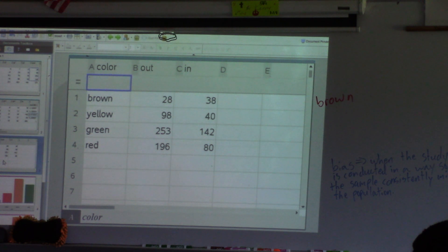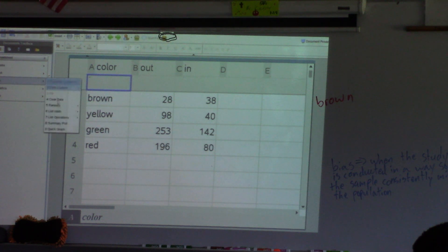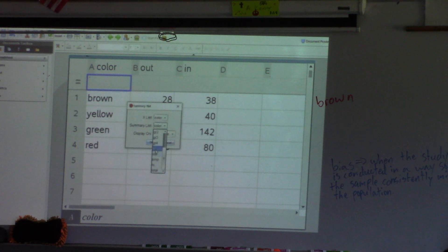Your X list, which is your X axis, you want to be color. The summary list, you want to be your either your in or your out. And then do the display on a new page. So there it is. Once you do your out, go ahead and do your in. Cameron, to make your life easier, don't do a split page, do a new page.